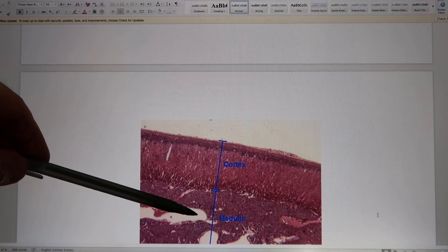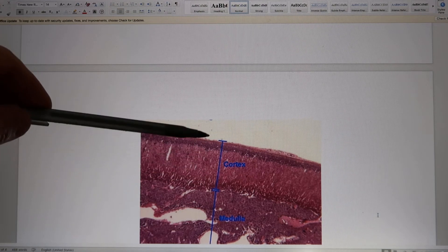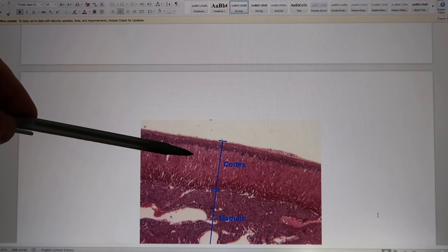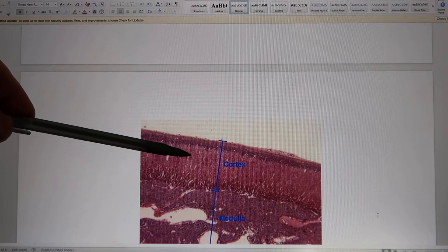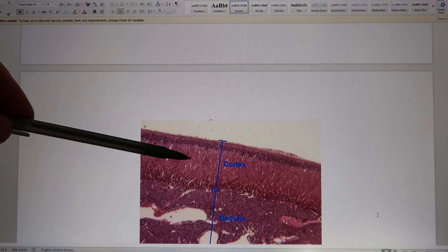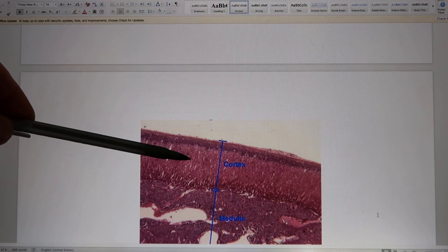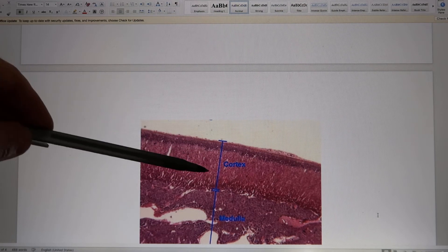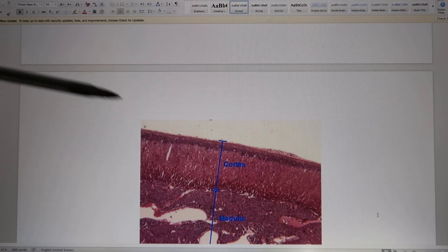It releases epinephrine, norepinephrine. Adrenal cortex is completely endocrine system. It releases steroid hormones. Three steroid hormones released from here. Androgen, aldosterone, and cortisol, stress hormone released from the adrenal cortex.